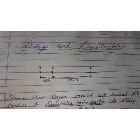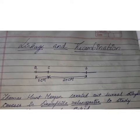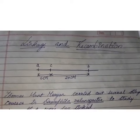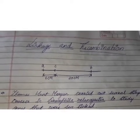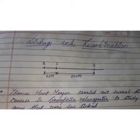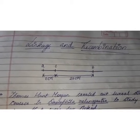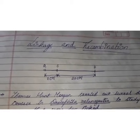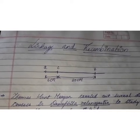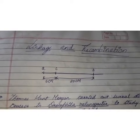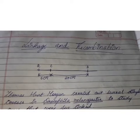As I have already described, linkage can be defined as the physical association between the genes on a chromosome, whereas recombination can be termed as the generation of non-parental gene combinations from the parental ones.